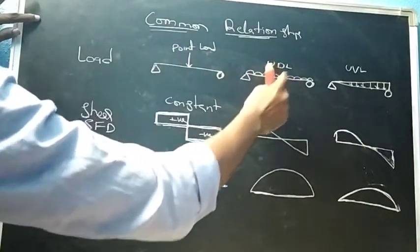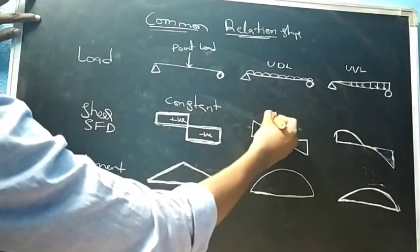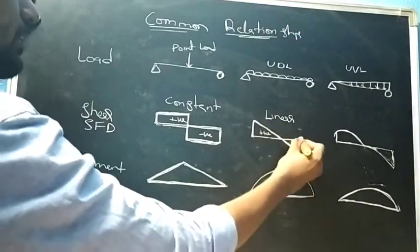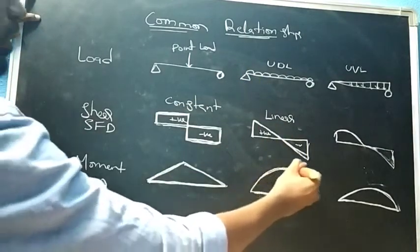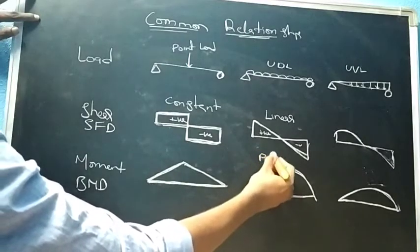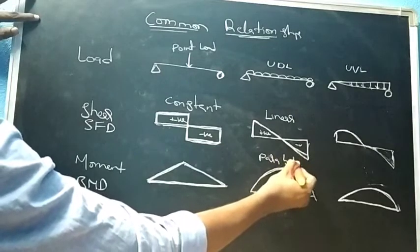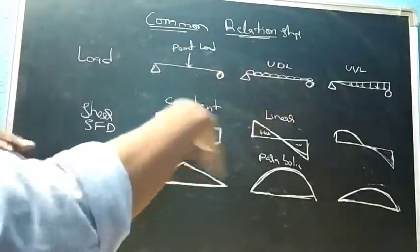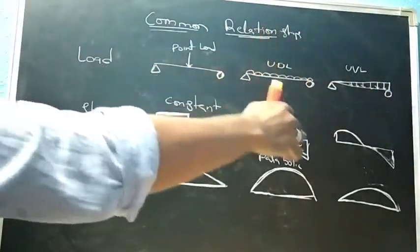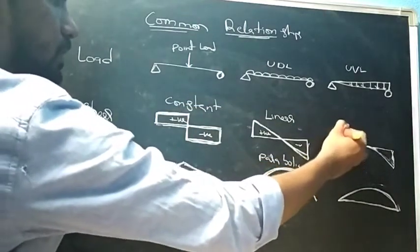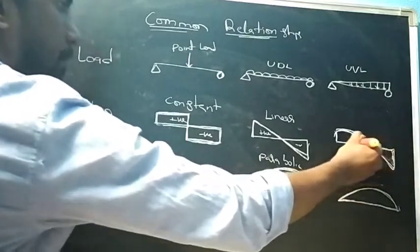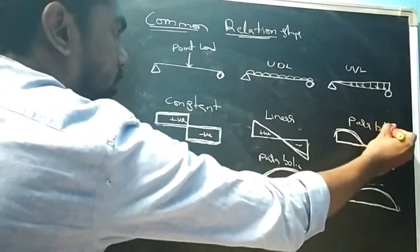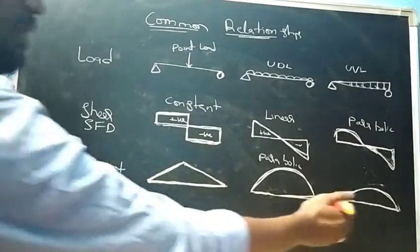In the case of a uniformly distributed load (UDL), the shear force will be linear — positive on one side and negative on the other — and the bending moment diagram will be parabolic. For a uniformly varying load, the shear force will be parabolic and the bending moment diagram will be cubic.